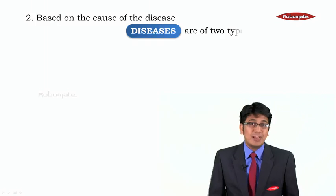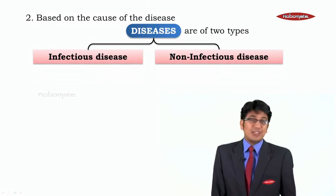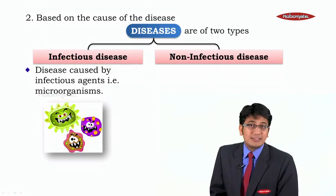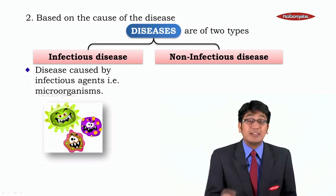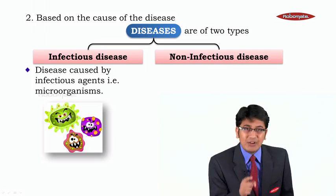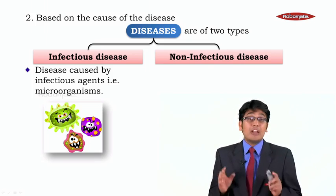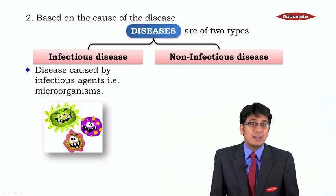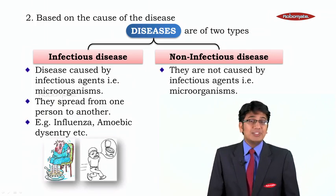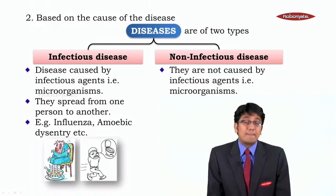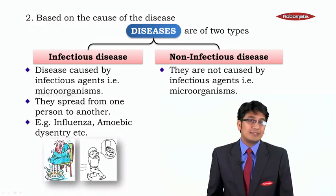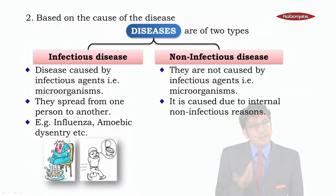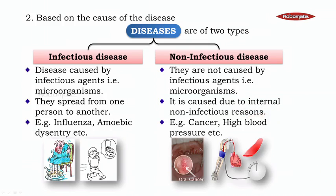Based on the cause of disease, there are again two types: number one, infectious disease, and number two, non-infectious disease. Infectious disease means disease caused by some infectious agent, that is a microorganism — it can be a bacteria, a virus, fungi, or any microorganism. Non-infectious diseases are not caused by any infectious agent or microorganism.